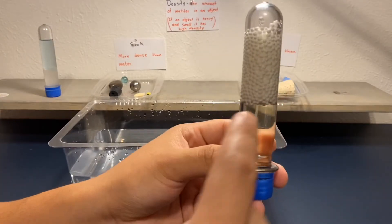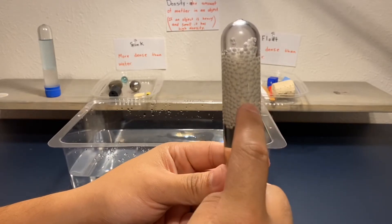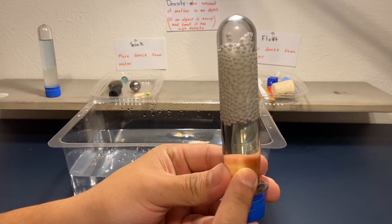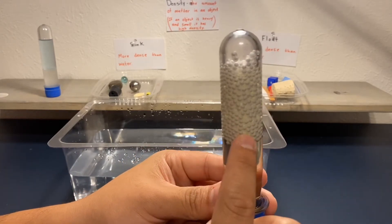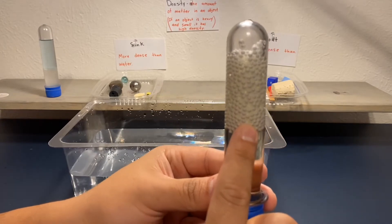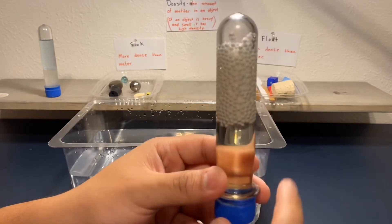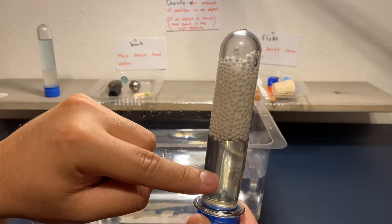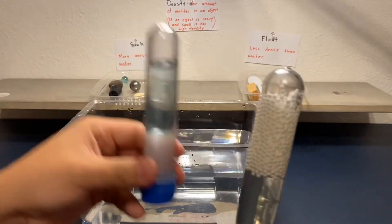In this tube I have styrofoam balls and I have oil. Now the styrofoam balls are going to float and the oil is going to sink—it's on the bottom. That means that the styrofoam balls are going to be less dense than oil. And you can conclude that these styrofoam balls are going to float in water since they float in oil, because oil floats in water.